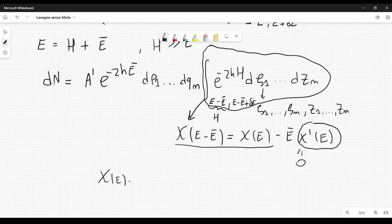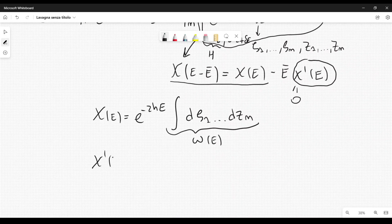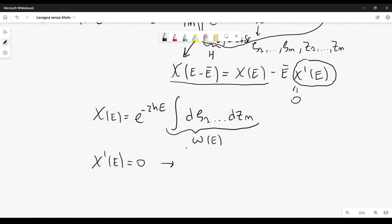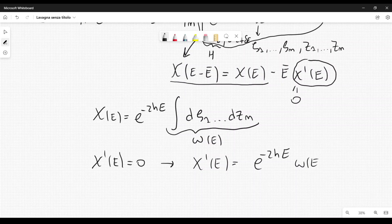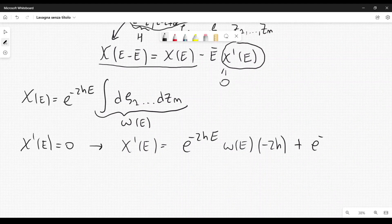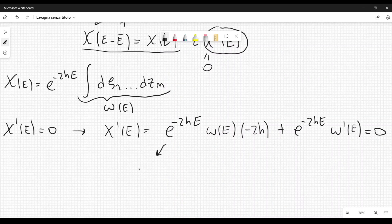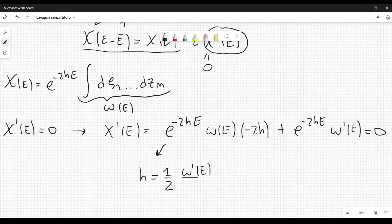So chi of E is equal to e to the minus 2HE integral over some very small region D zeta one dot dot dot DZn. And Einstein called this integral here omega of E because it depends on the energy E. And then he set chi prime of E equal to zero. If we take the derivative of chi of E, chi prime of E is equal to e to the minus 2HE omega of E times minus 2H plus e to the minus 2HE omega prime of E. And then now we can set this equal to zero. We can solve this equation for H, and H is equal to one half omega prime of E divided by omega of E.